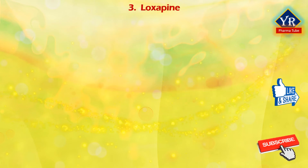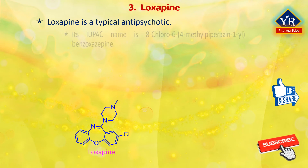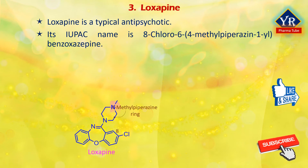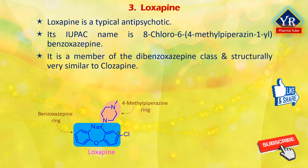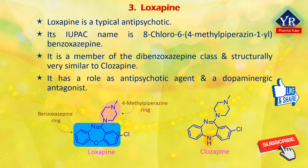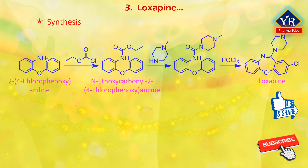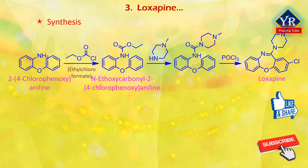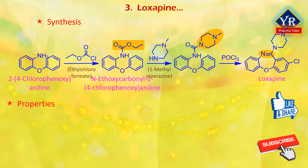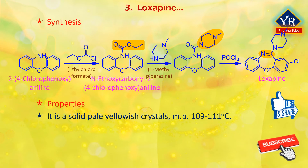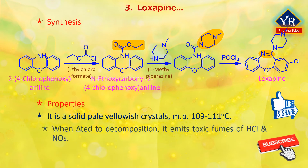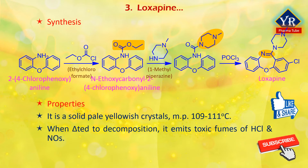The next drug is loxapine. Loxapine is classified as a typical antipsychotic drug but behaves as an atypical antipsychotic. Its IUPAC name is 8-chloro-6-(4-methylpiperazin-1-yl)dibenz[b,e][1,4]oxazepine. It is a member of the dibenzoxazepine class and structurally very similar to clozapine. Loxapine is synthesized from 2-(4-chlorophenoxy)aniline, which upon acylation using ethyl chloroformate forms N-ethoxycarbonyl-2-(4-chlorophenoxy)aniline. Treatment of this product with 1-methylpiperazine and subsequently a mixture of phosphorus oxychloride and phosphorus anhydride gives loxapine. Loxapine is a solid pale yellowish crystal from petroleum ether with a melting point between 109 and 111 degrees centigrade. When heated to decomposition, it emits very toxic fumes of hydrogen chloride and nitrogen oxides.